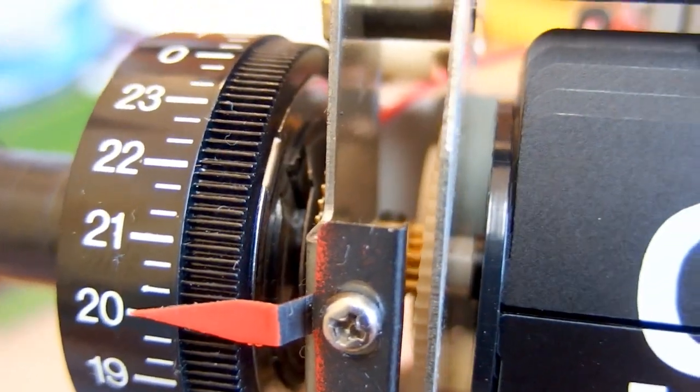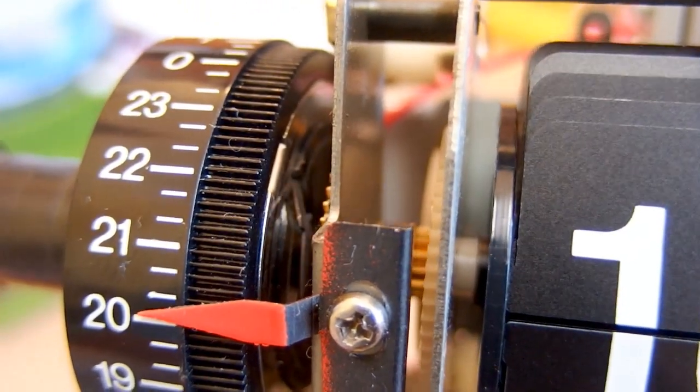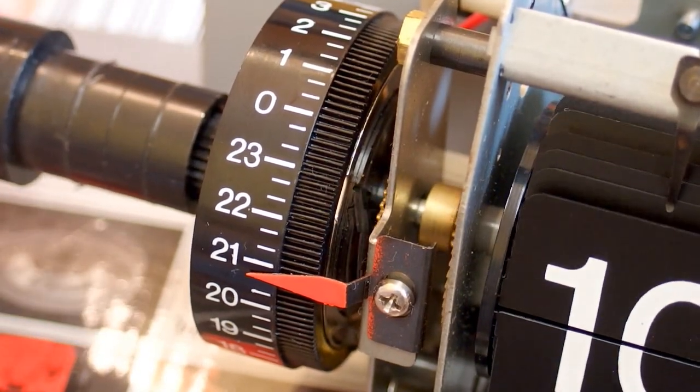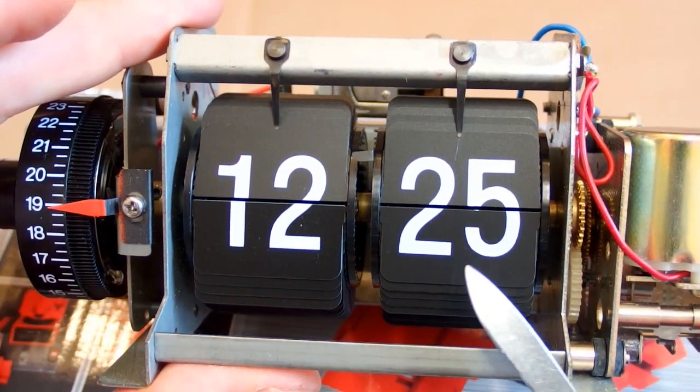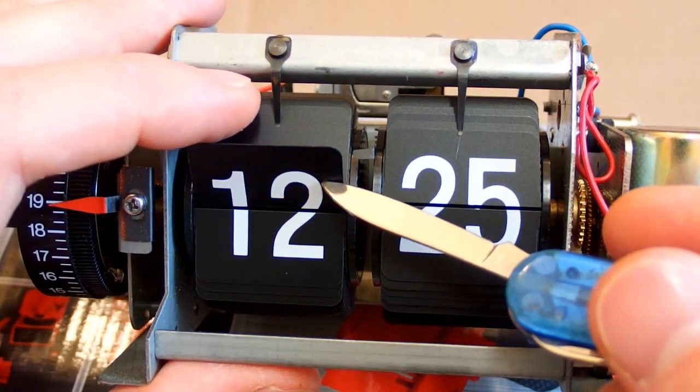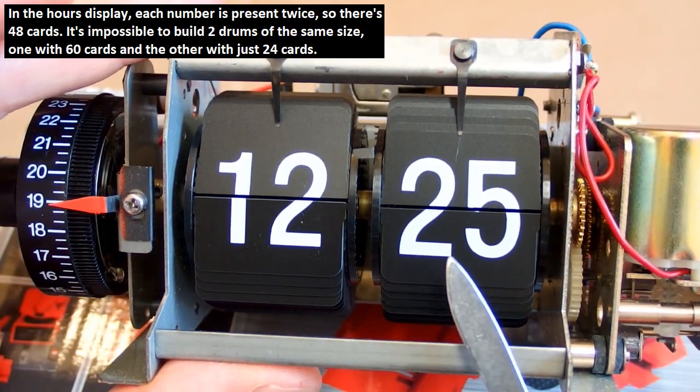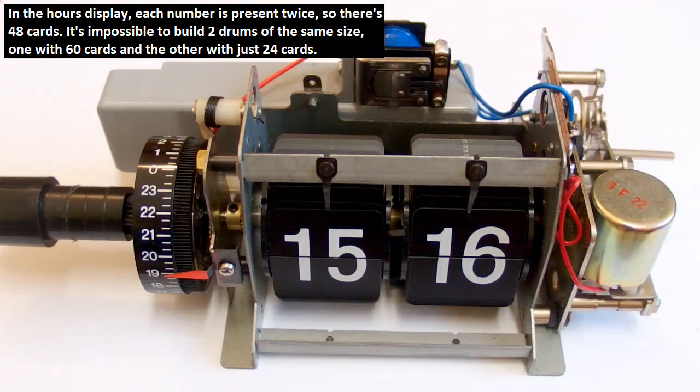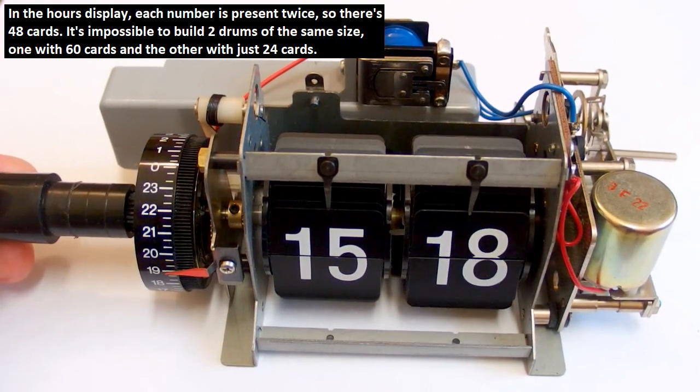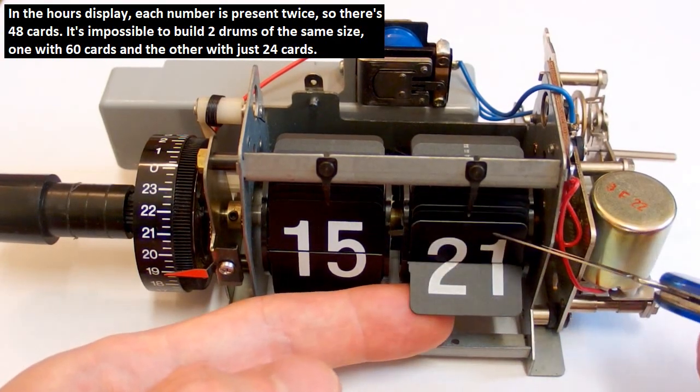This contact moves with the clock. Because there are 60 minutes but only 24 hours, each card is twice here as you can see. So the number of cards in hours is closer to the number of cards in minutes. So sometimes the hours flip without changing the number. Right now. But in minutes each number is there just once.